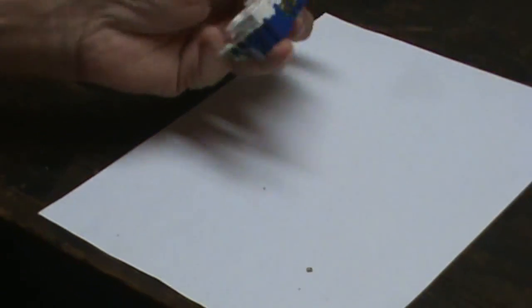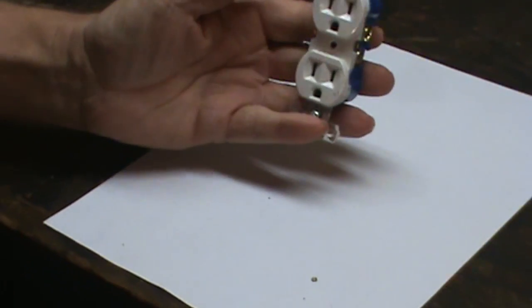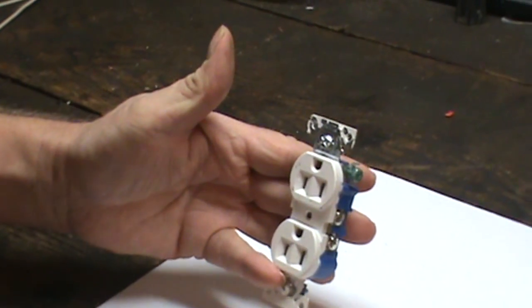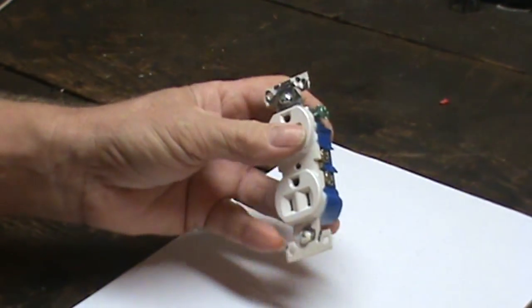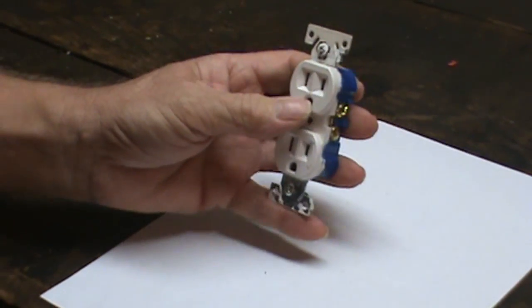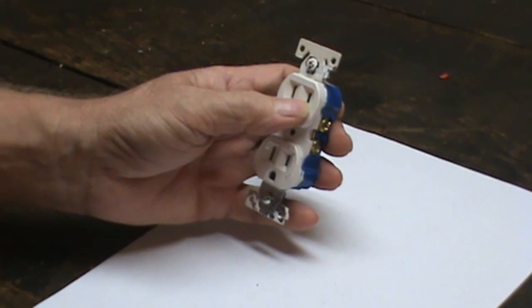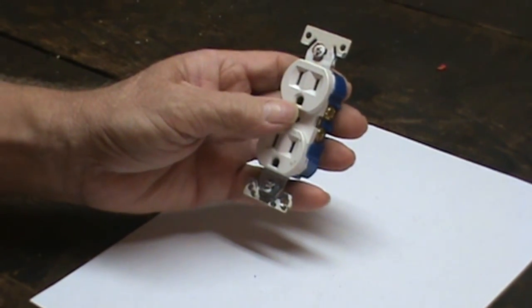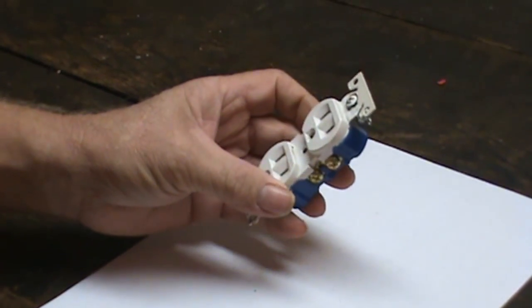When people put these in their houses, most people put them in with the hole down, but a lot of people put them with the hole up. It really makes no difference. But for the purpose of this video, up is going to be with the slots on top. The small slot is your hot side. The large slot is your common. The hole is your ground. So now let's start wiring.